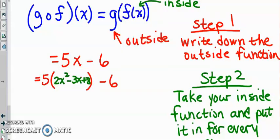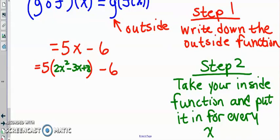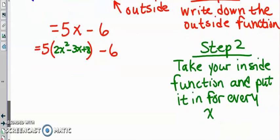All right there we go. All right, so we took the outside function, wrote it down, we took the inside function and put it in for every x. All right, so then the last step we said was to simplify it. I'm going to put that right down here - step 3.